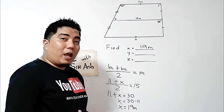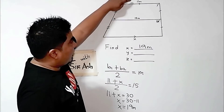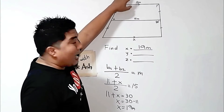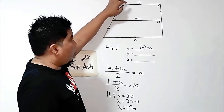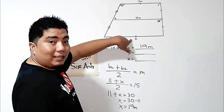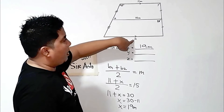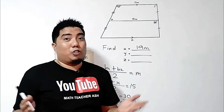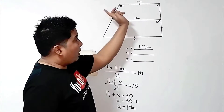Now, how do we know that we got the correct answer? You can just check by adding the first base to the second base and dividing by 2. So 11 plus 19 is 30, and 30 divided by 2 is 15. So you are correct. Easy, right?